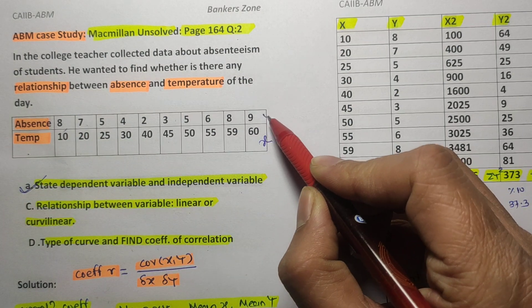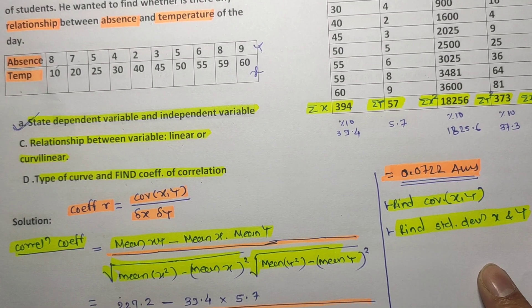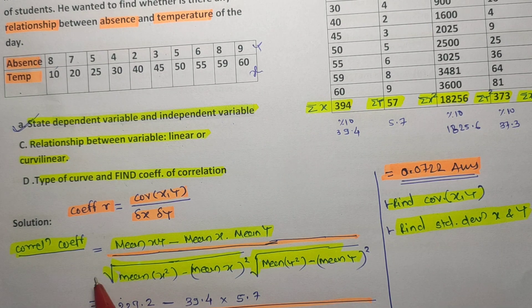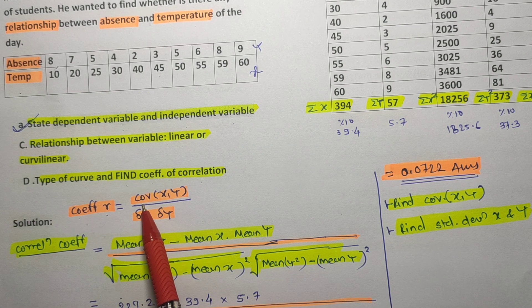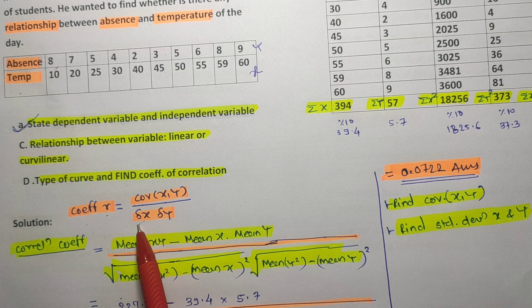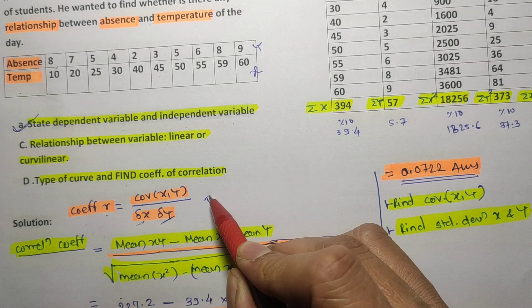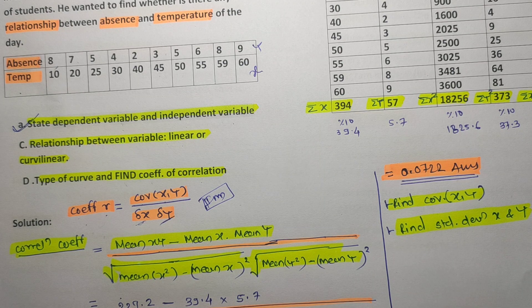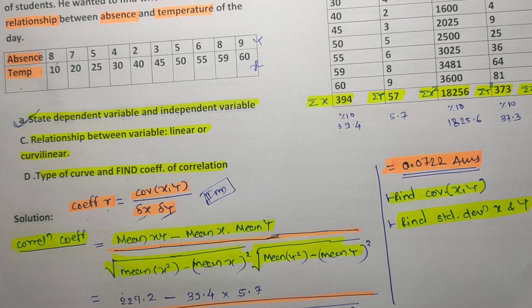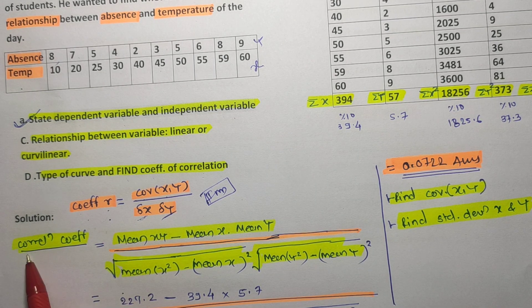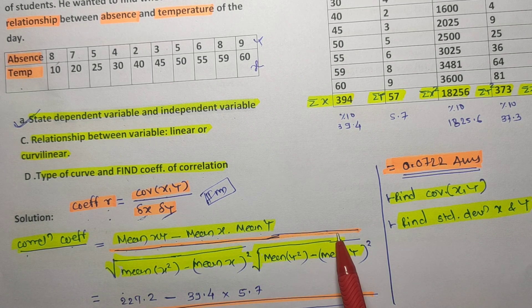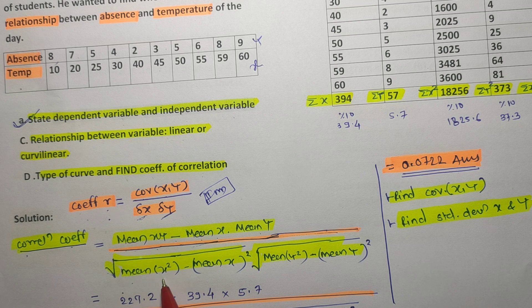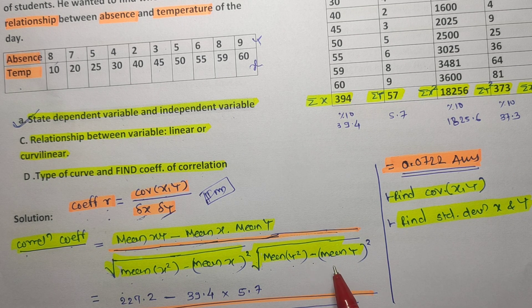To find the coefficient of correlation, the basic formula is: r = covariance(X,Y) divided by standard deviation of X into standard deviation of Y. The simplified derived formula is: r = [mean(XY) − mean(X)·mean(Y)] divided by the square root of [mean(X²) − (mean X)²] into the square root of [mean(Y²) − (mean Y)²].